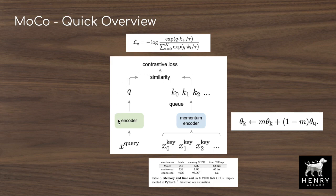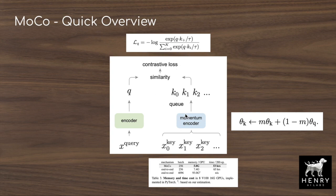The key encoder's parameters are updated by taking the previous key encoder weights and blending them with the new query encoder weights after a gradient step. The key encoder is a different network from the query encoder, progressively and slowly evolving via the momentum update. This makes MoCo much more memory efficient than end-to-end approaches, and also more efficient than a simple memory bank of previously encoded keys, since those representations become outdated as the dynamic dictionary evolves during training.